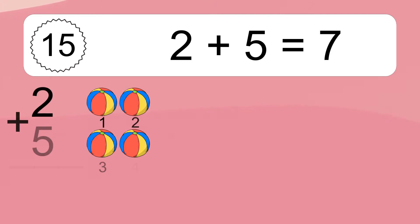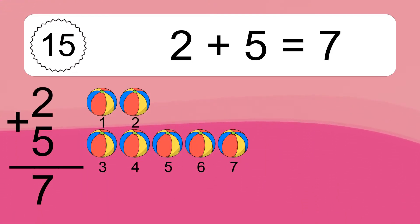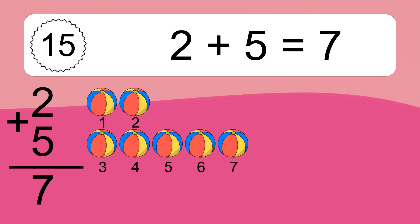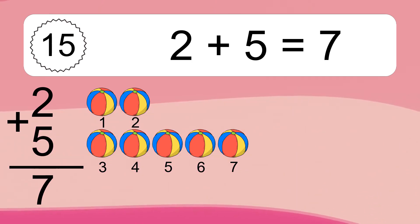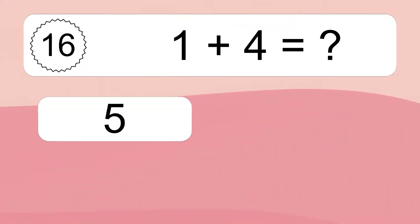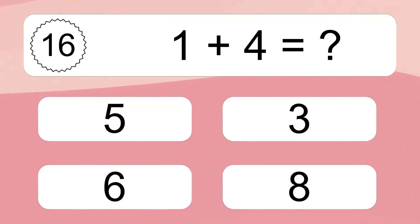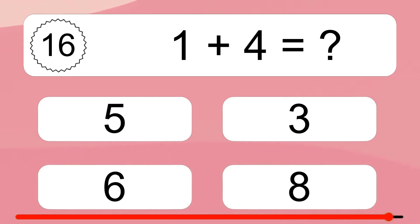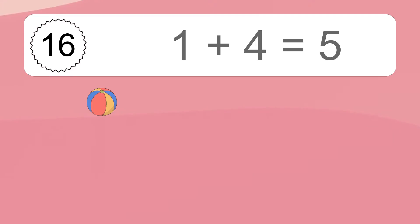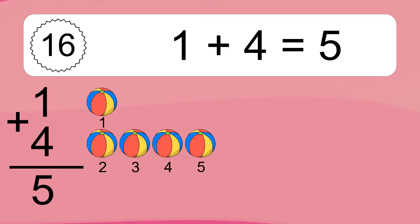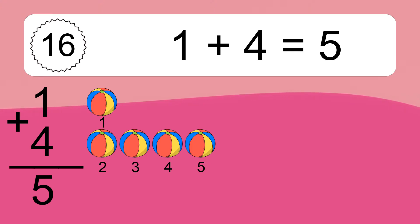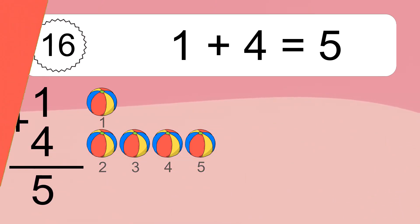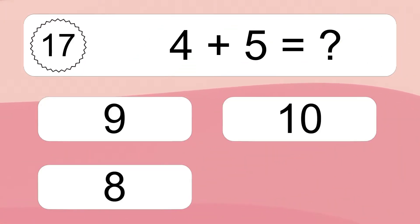2 plus 5 equals 7. Let's count it: 1, 2, 3, 4, 5, 6, 7. 1 plus 4 equals what? 1 plus 4 equals 5. Let's count it: 1, 2, 3, 4, 5.